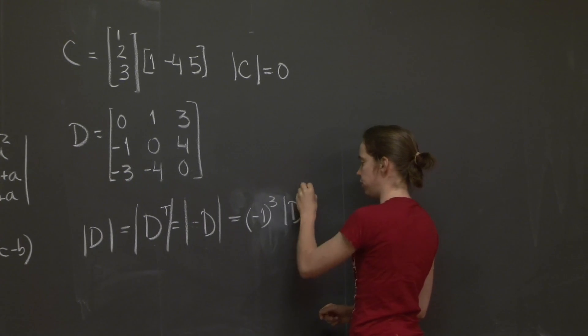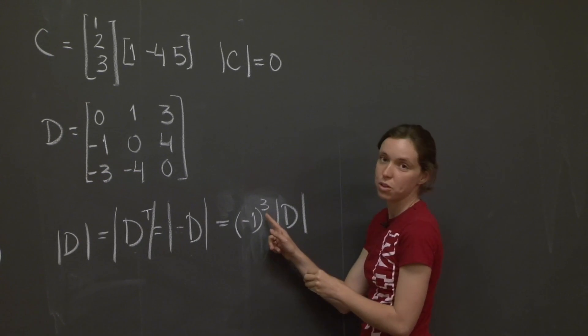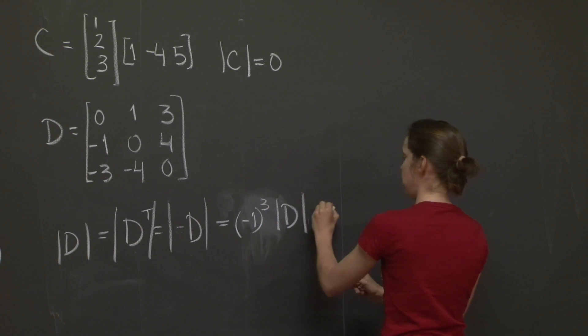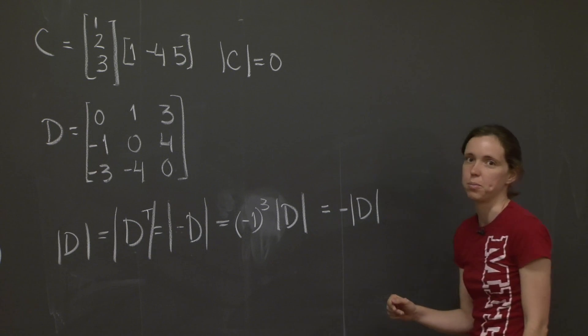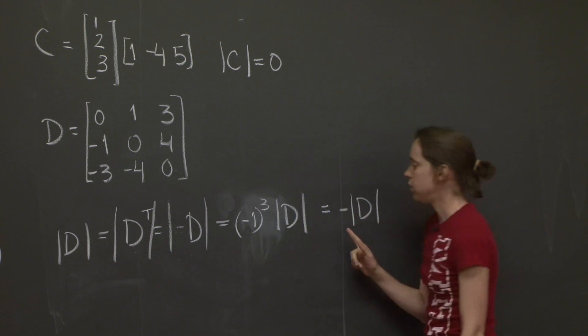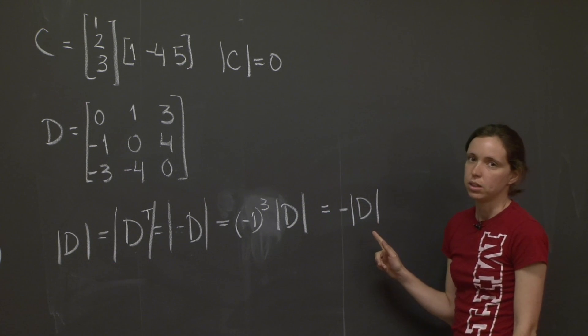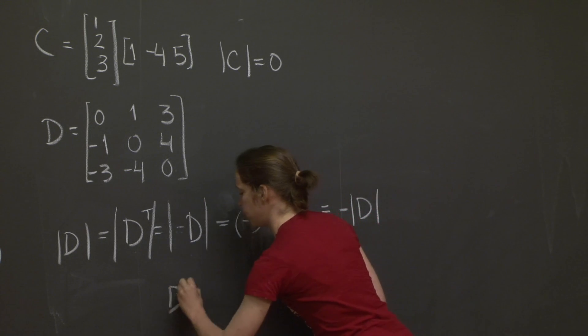So, what I should have written was minus 1, that's my factor minus. How many rows do I have? One, two, three. Pull it out once for each row, times the determinant of D. Well, fortunately, minus 1 to the third is simply equal to minus 1, so here we go. It was correct, in fact. We have determinant of D is equal to minus determinant of D. What is the only number that is equal to minus that number? Zero. Determinant of D is equal to zero.